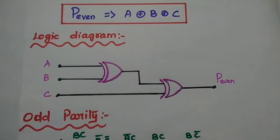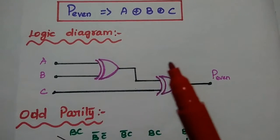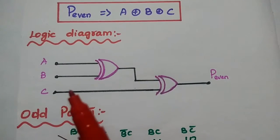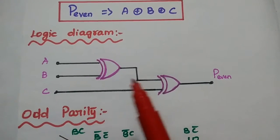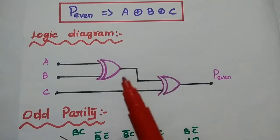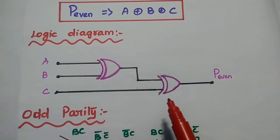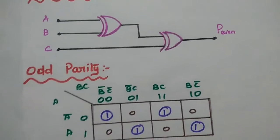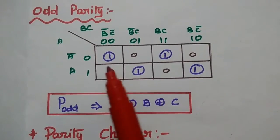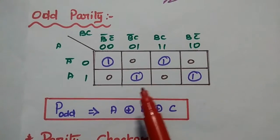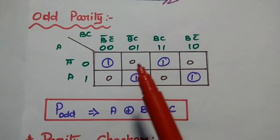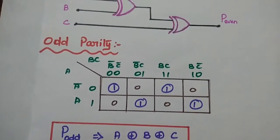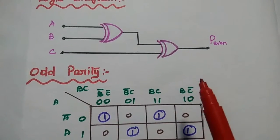Next, we draw the logic diagram for the even parity bit. Here A, B, C are the three input message signals. For these three input bits, we generate even parity using two XOR gates: A XOR B, and then XOR with C. This is the logic diagram for even parity bit. Similarly, for odd parity bit, the K-map simplification leads to the same expression A XOR B XOR C, so even and odd parity share the same logic diagram.